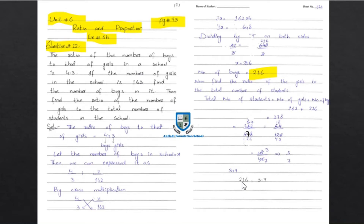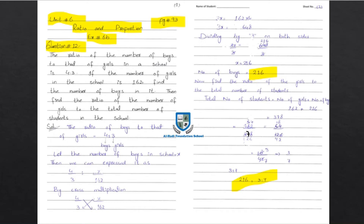The ratio is 3 to 7. We found the girls' ratio is 3 and total is 7. This means boys' ratio is 4, which matches (3 + 4 = 7), confirming our answer. Our two answers are: number of boys = 216, and girls to total ratio = 3 is to 7. Question number 12 is completed.